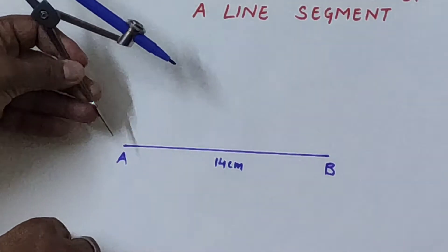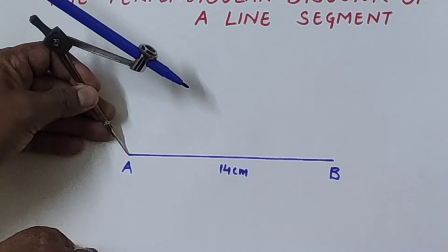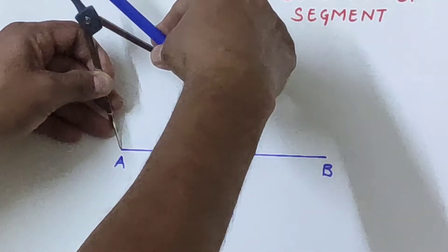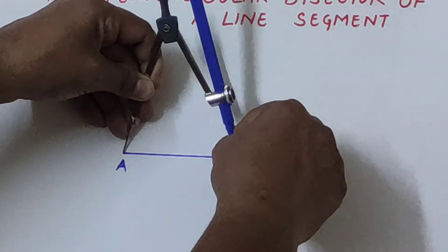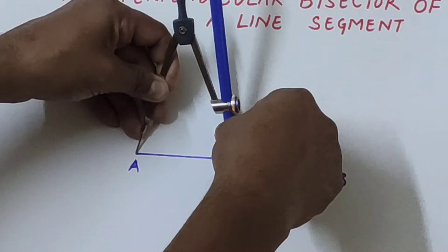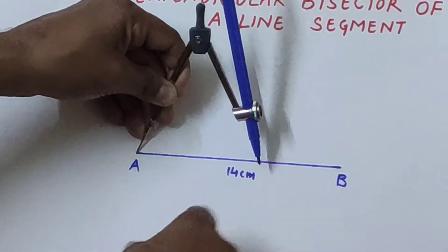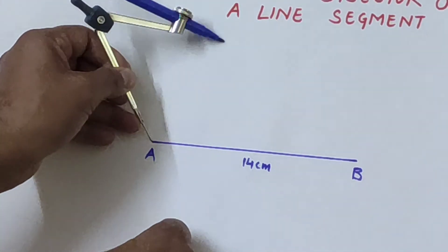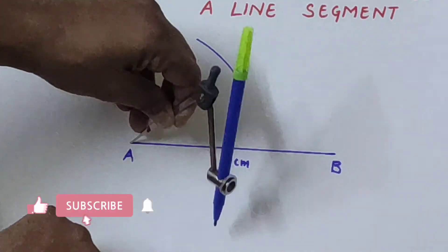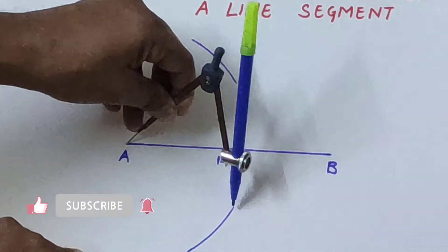Now we need to keep the compass at point A and take a length more than half of the segment. So half somewhere here you will get - it should be more than half, any length but should be more than half. Make an arc up and down of segment AB.